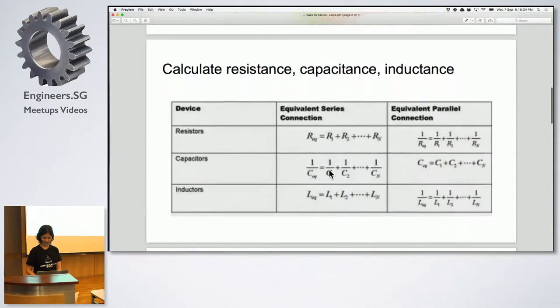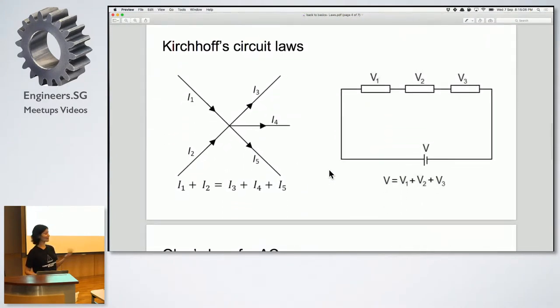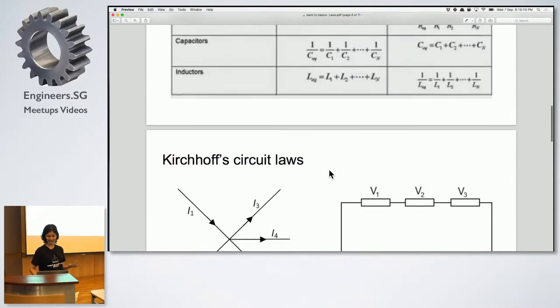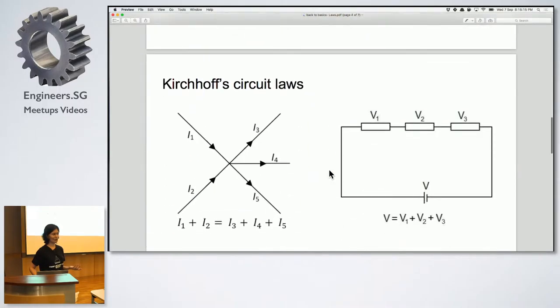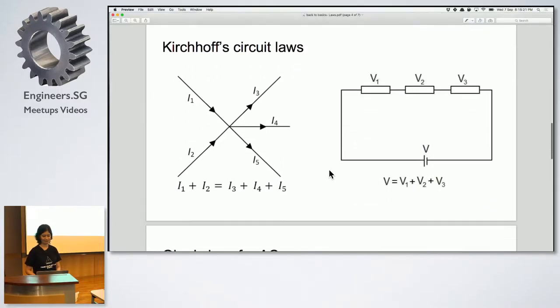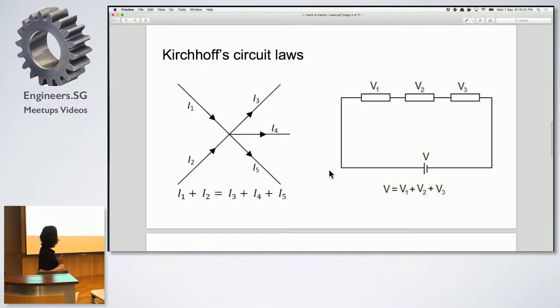The next one is, of course, Kirchhoff's law that some of you also pointed out. So this kind of ties in with the vintage, because Ohm and Kirchhoff are scientists by themselves. Which year were they? I think Kirchhoff was like 1847 or something like that. So Kirchhoff's law, what are they? They are two laws. One is the current law.